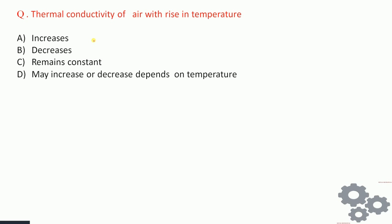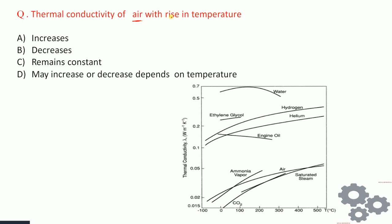Next question: thermal conductivity of air with rise in temperature — increases, decreases, remains constant, or may increase or decrease? Similar to the last question but now for air. Looking at the graph, the thermal conductivity of air is increasing with temperature. Therefore the answer is: thermal conductivity of air with rise in temperature always increases.